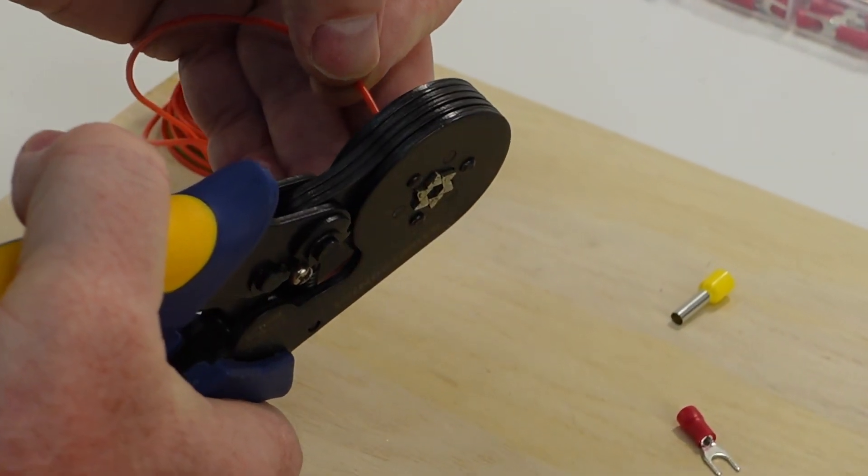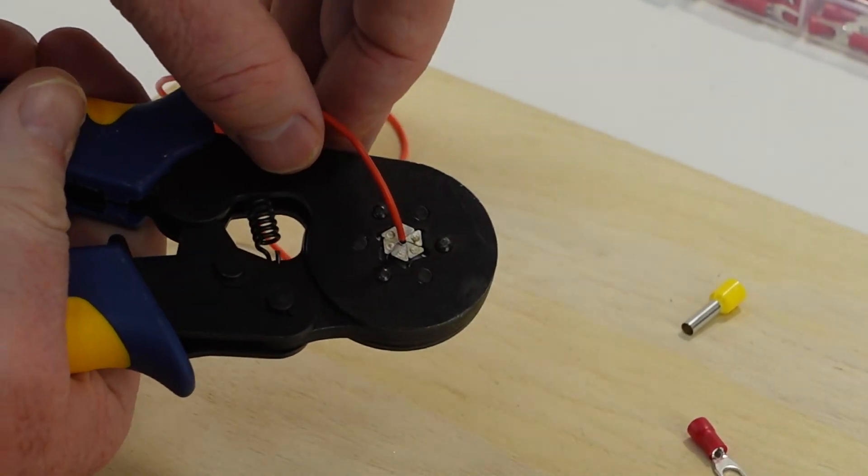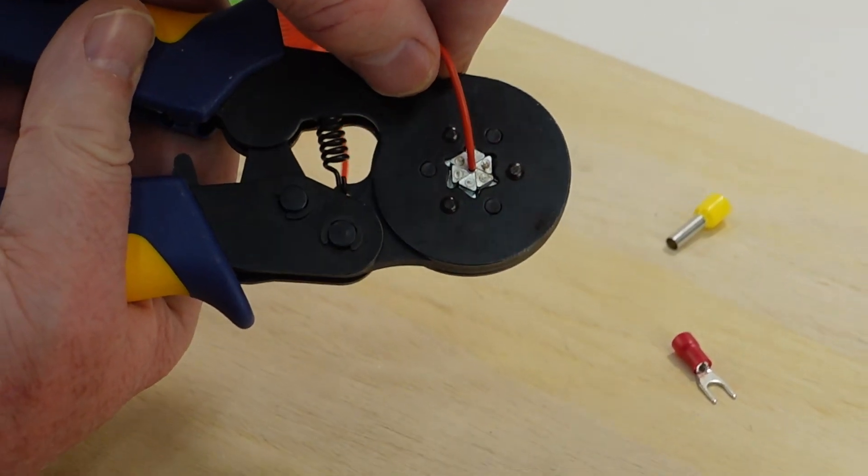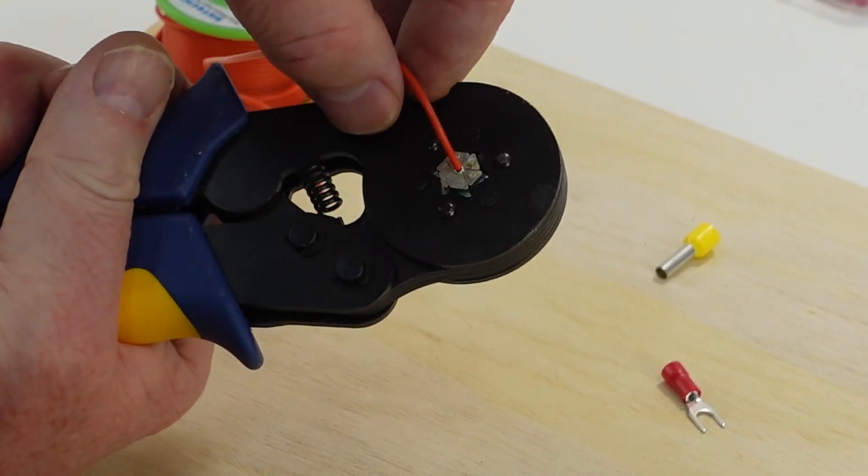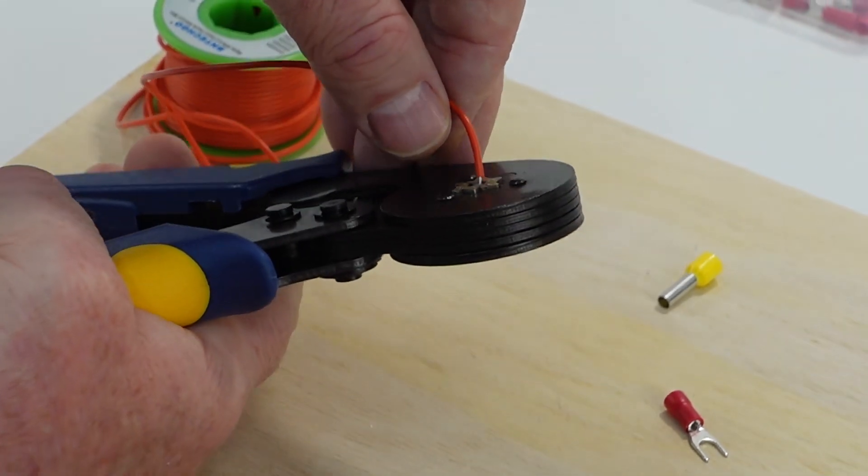So we're going to slip our ferrule in there. And you can see, I'll turn it this way because it's not going all the way through. And then we're just going to give it a nice crimp. The pliers are going to go, the handles are just going to go all the way. Now, one of the things that you're going to notice here is you can see the crimp marks here.